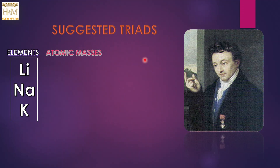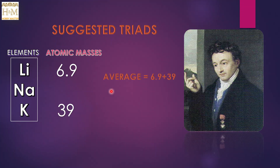Here is a triad suggested by Döbereiner: Lithium, Sodium, and Potassium. The atomic mass of lithium is 6.9 and that of potassium is 39, so the average of lithium and potassium gives us 23, and we know that the atomic mass of sodium is 23. In simple words, the atomic mass of the second element is approximately equal to the average of the atomic masses of the first and third elements.